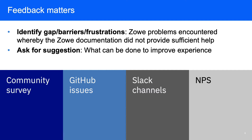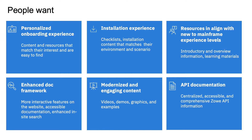So you may wonder how we validate the experience. We have different channels where people could reach out to us such as the quarterly community survey, GitHub repo, Slack channels, and NPS. There are two focuses: one is to identify gaps, and then identify what users want in their content experience. We gathered a lot of data and feedback, and based on our analysis, we found that our users want better content experience in six key areas.